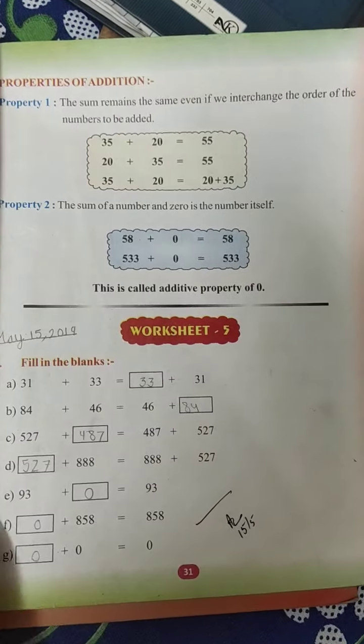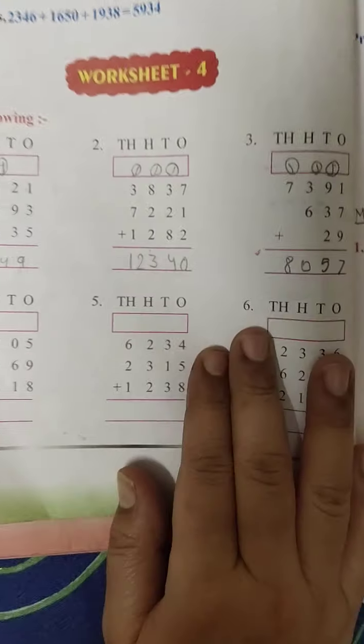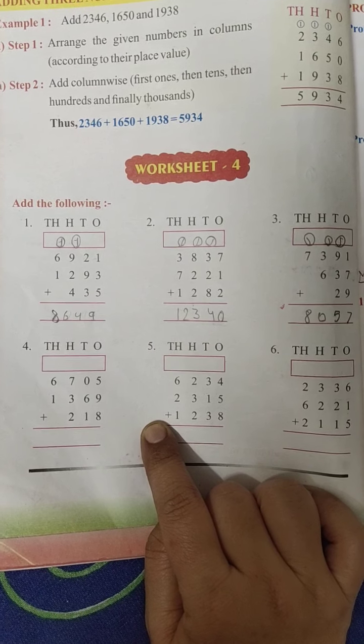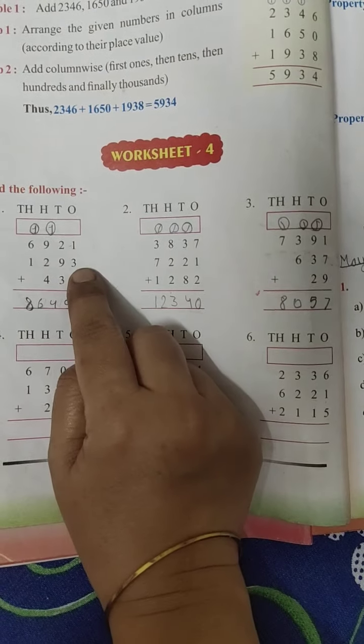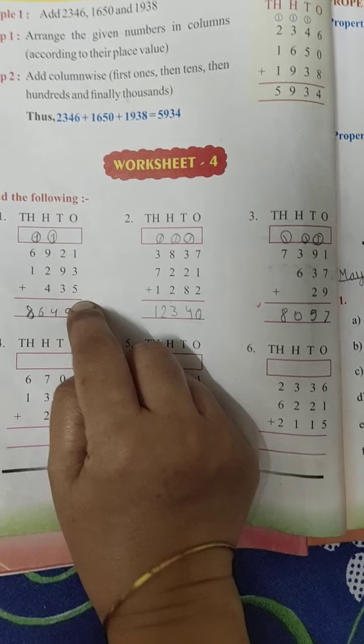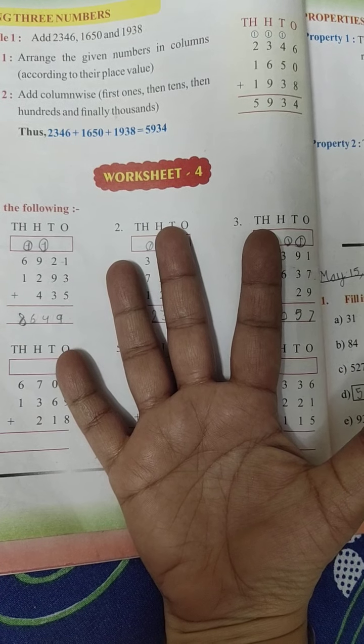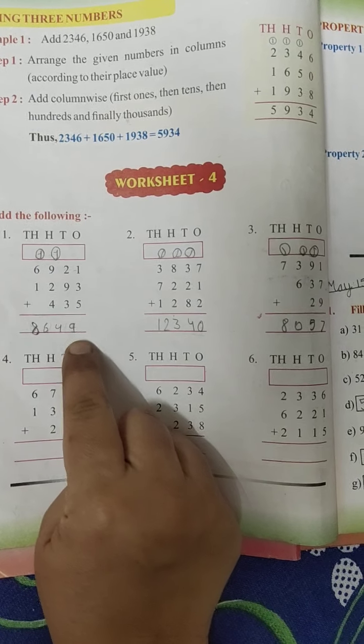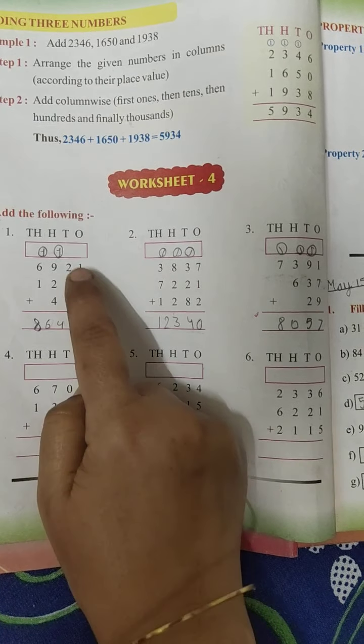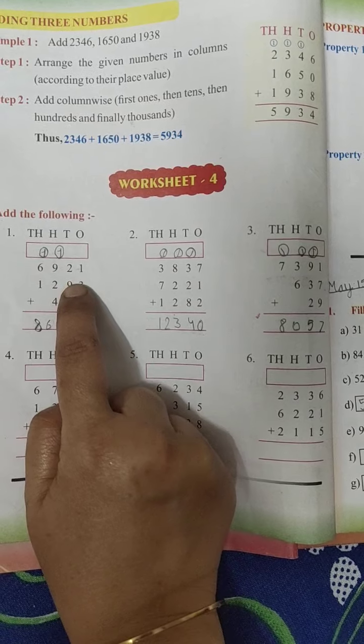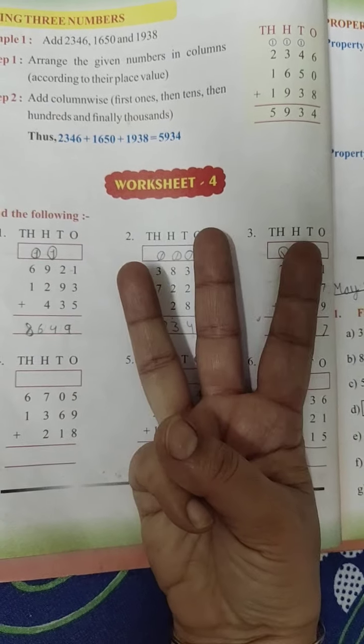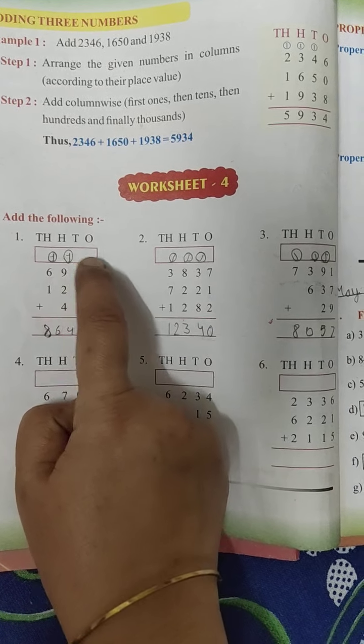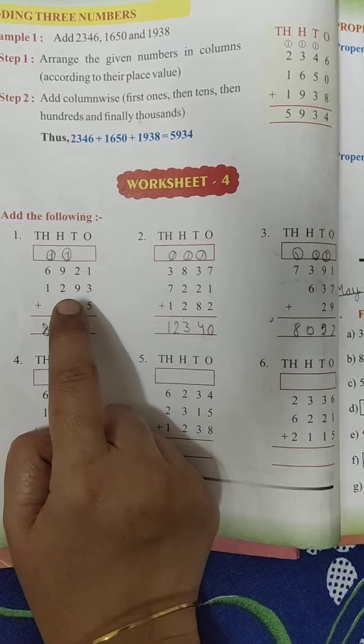You will solve worksheet 2, 3, and similarly worksheet 4 also. Worksheet 4 you will solve. One plus three is four. In four, you open five fingers and count after 4: 5, 6, 7, 8, 9. Write 9 here. Two and nine is eleven. Eleven, how many fingers? Three. Count: 12, 13, 14. Write 4 here. One carry. Nine and one is ten.